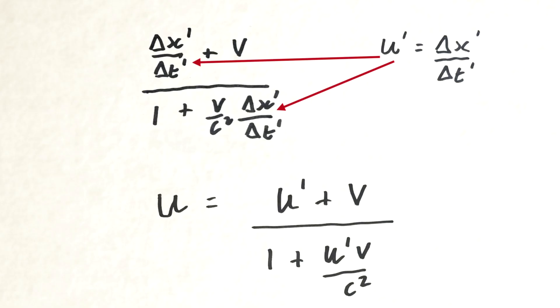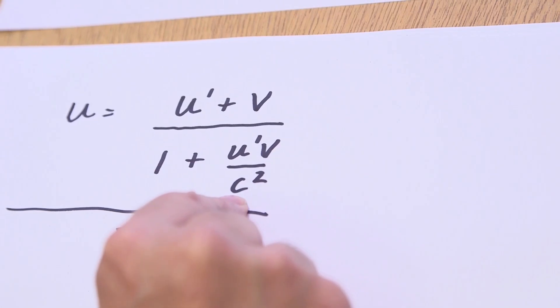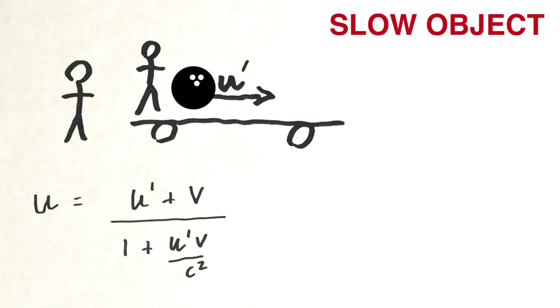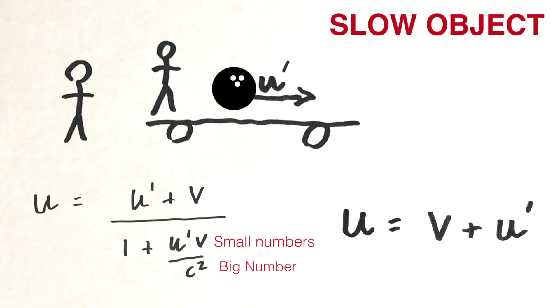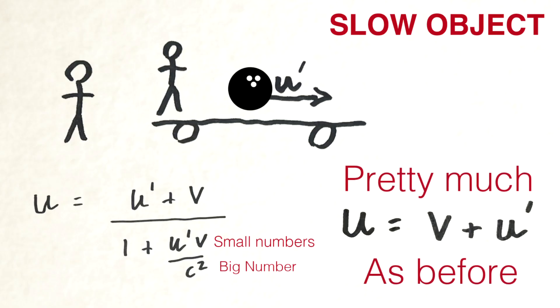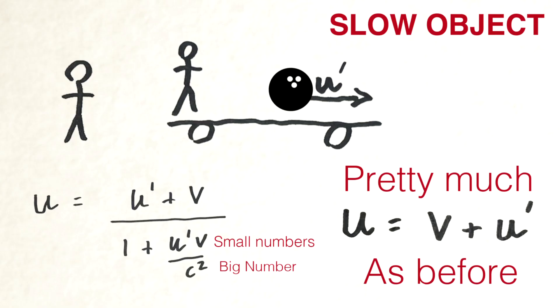That's the final answer. In the non-relativistic limit — the Galilean case — if both u prime and v are small compared to the speed of light, the term u prime v over c squared is tiny, so the denominator is just 1. That says the speed you see is just the sum of the ball's speed relative to the train and the train's speed relative to you, which is the answer we had before. It comes out correctly when things aren't close to the speed of light.